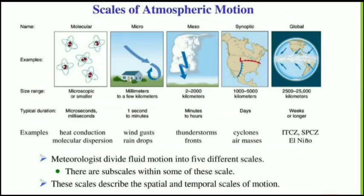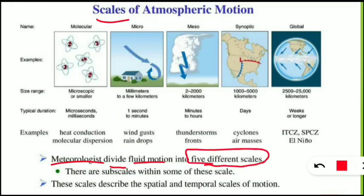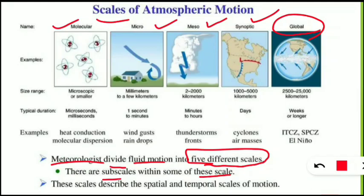As we continue discussing meteorological parameters, the scales of atmospheric motion from Unit 1 are also very important. Meteorologists have divided fluid motion in the atmosphere into five different scales: molecular level, micro level, mesoscale, synoptic scale, and global scale. There are also subscales within some of these, and these scales describe both spatial and temporal scales of motion.